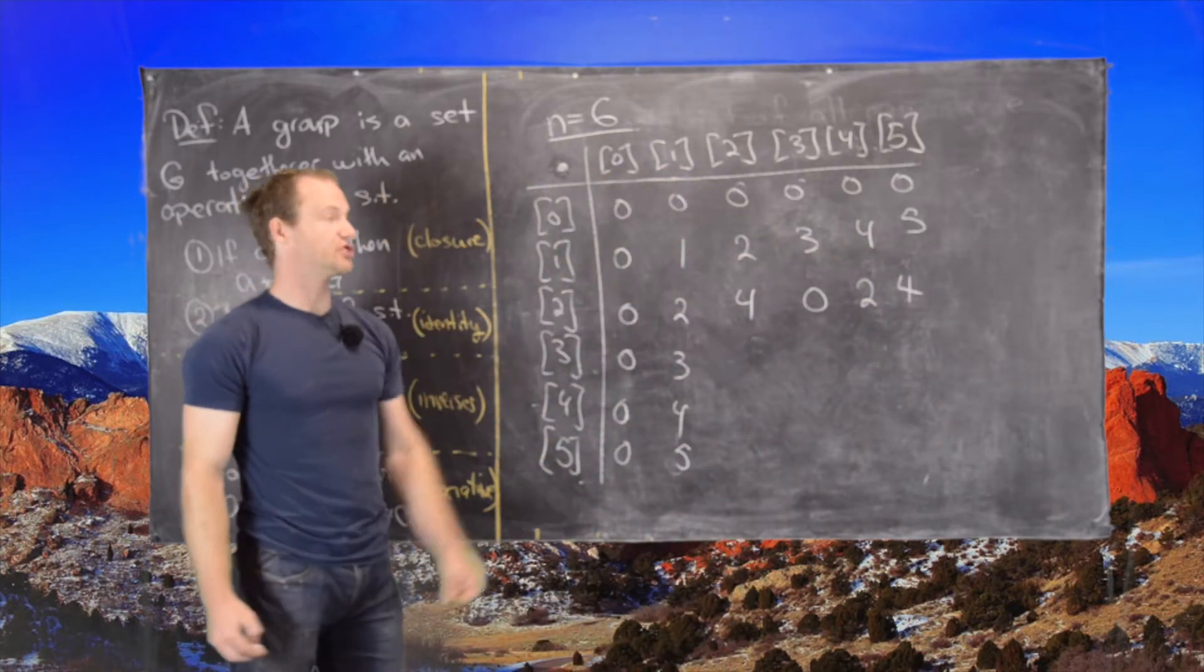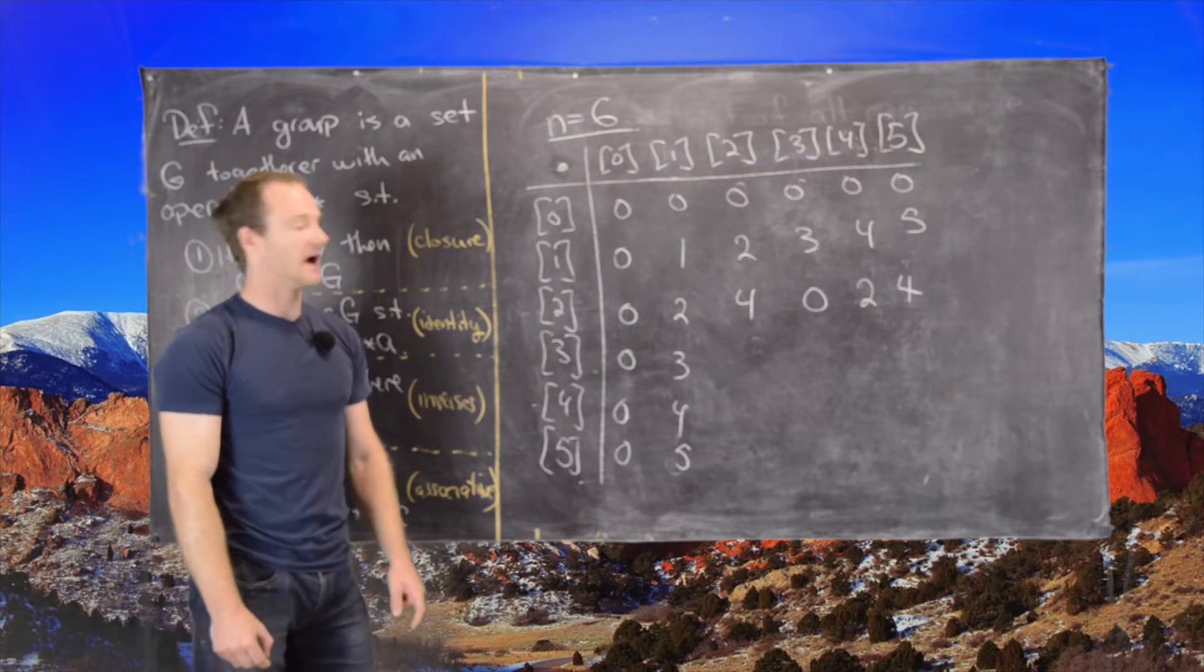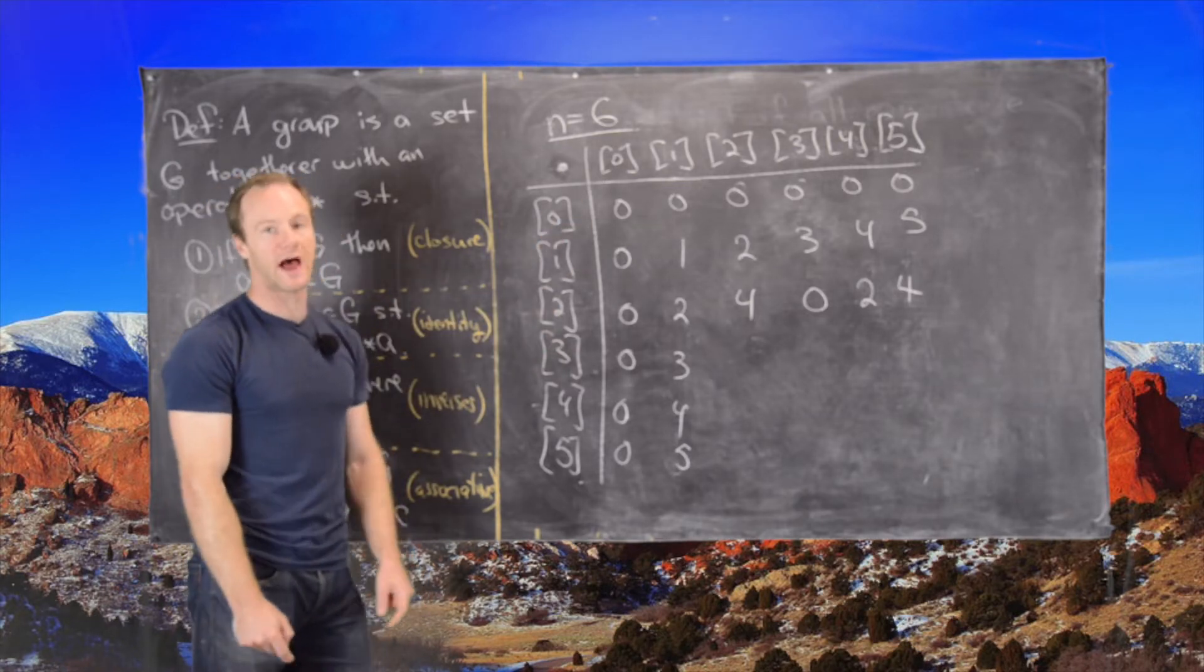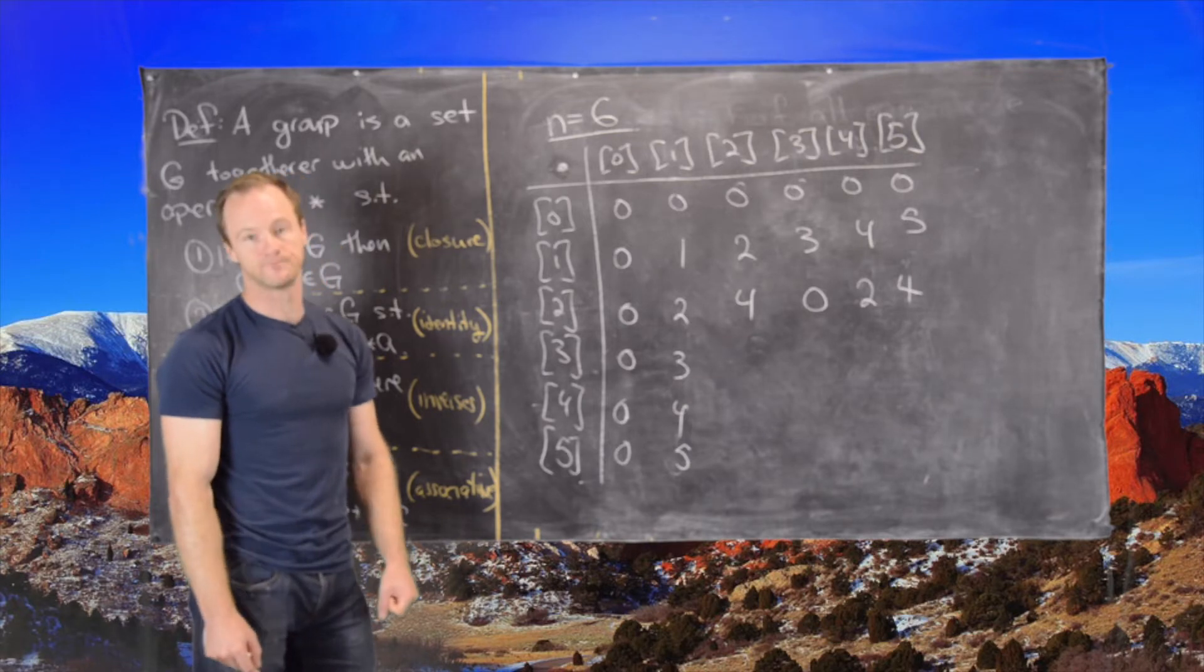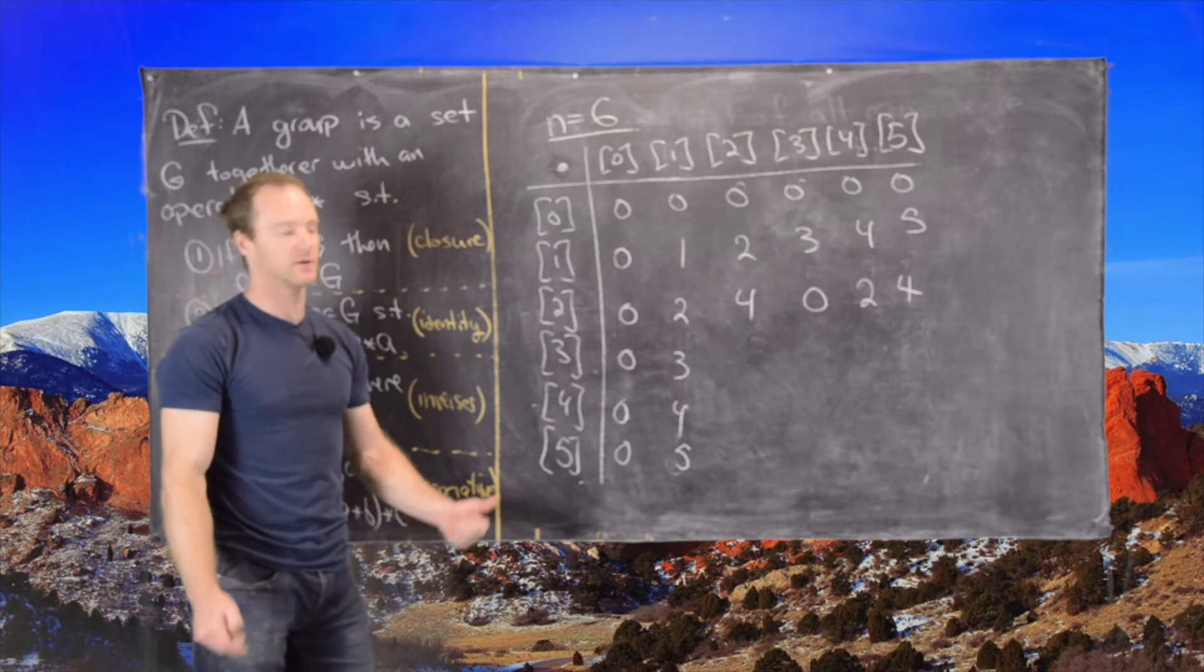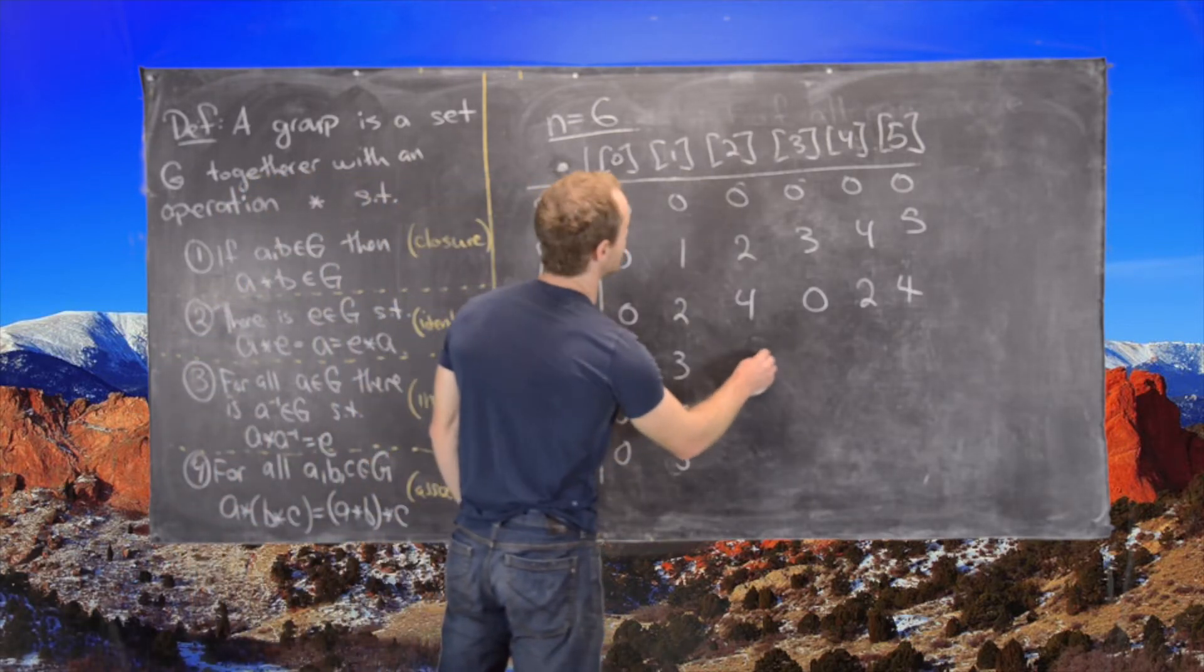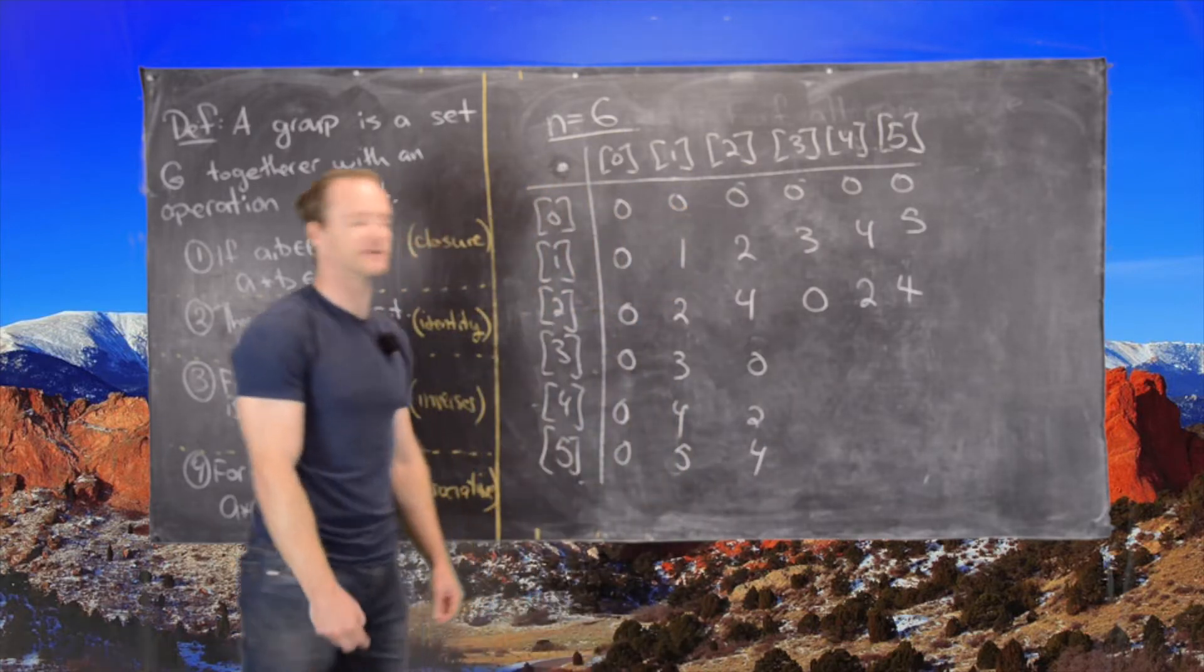So now notice there's no 1 in this row, which means 2 does not have an inverse. Another thing that's interesting is when we multiply 2 and 3, even though neither of those is 0, we get the product is 0, which is not something that happens like in the real numbers, for example. Now we'll do the same thing here. So here we get 0, 2, 4 just by the symmetry of this table.